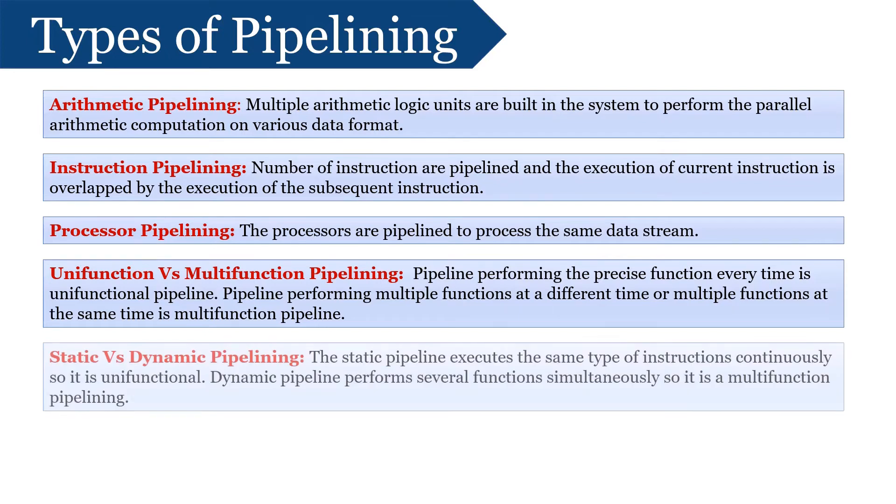Next is Static vs Dynamic Pipelining. The static pipelining perform a fixed function each time. Thus, it is also known as unifunctional. The static pipeline execute the same type of instructions continuously and frequent change in type of instruction may vary its performance. However, Dynamic Pipeline performs several functions simultaneously. Thus, it is also known as Multifunctional Pipelining.